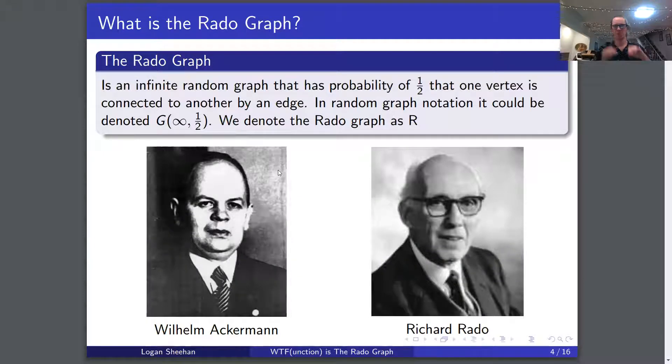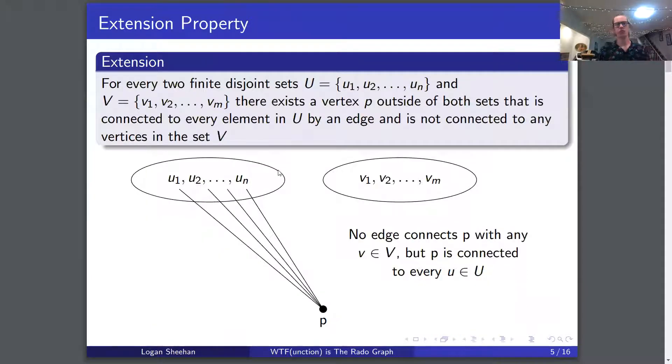Now on to the Rado graph, the meat and potatoes of this presentation. It is an infinite random graph that has probability of one half that one vertex is connected to another by an edge. In random graph notation, it's denoted g infinity comma one half, and we denote the Rado graph as R. It was originally found in 1937 by Wilhelm Ackermann as a directed graph, but later rediscovered by Richard Rado in 1964 as a universal graph.